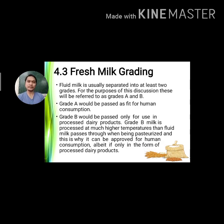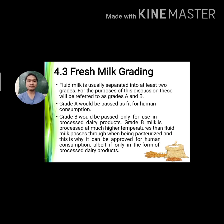On grading of fresh milk: fluid milk is usually separated into at least two grades — Grade A, which is fit for human consumption, and Grade B, which is passed only for use in processed dairy products. Grade B milk is processed at much higher temperatures than fluid milk when being pasteurized. Fluid milk attracts higher prices than milk destined for processed products, partly to compensate for the additional cost of marketing a highly perishable product and storing a bulky commodity.